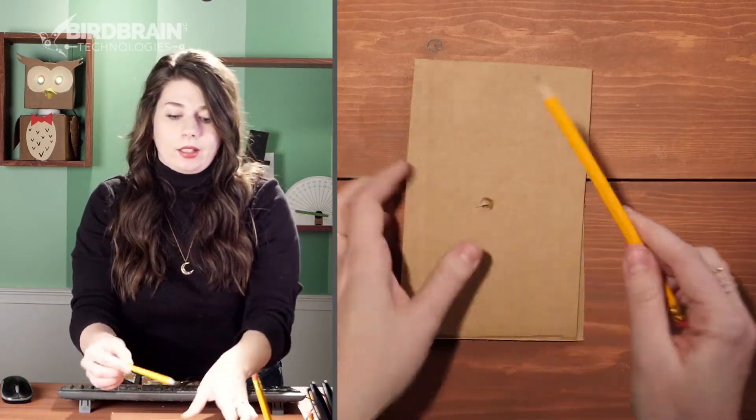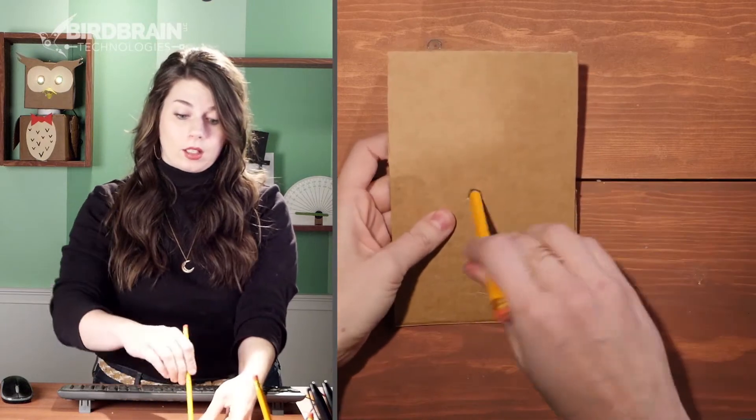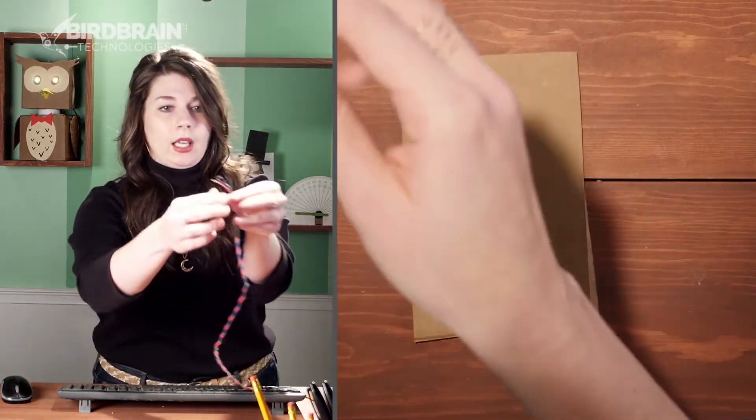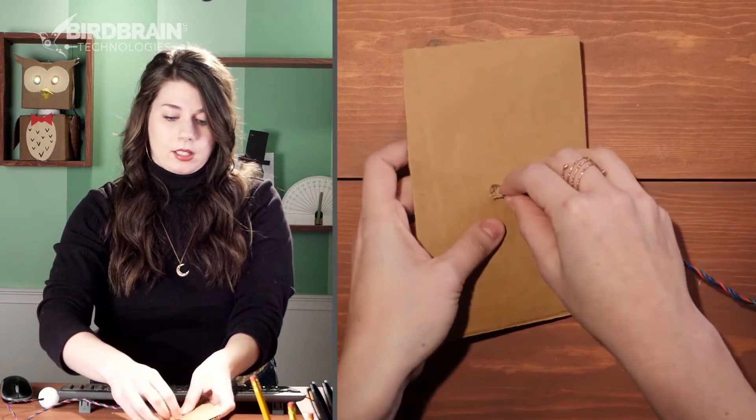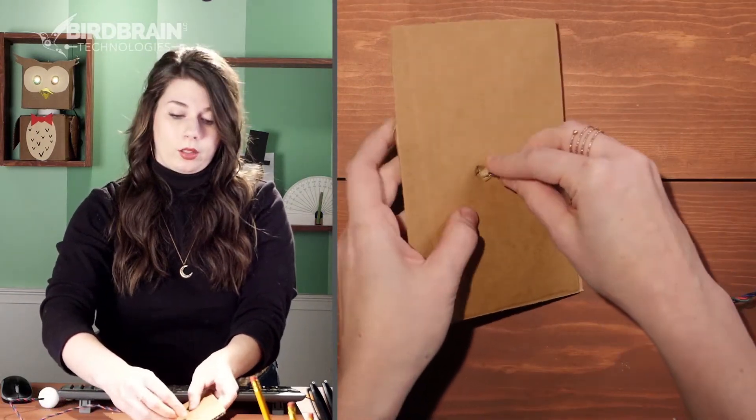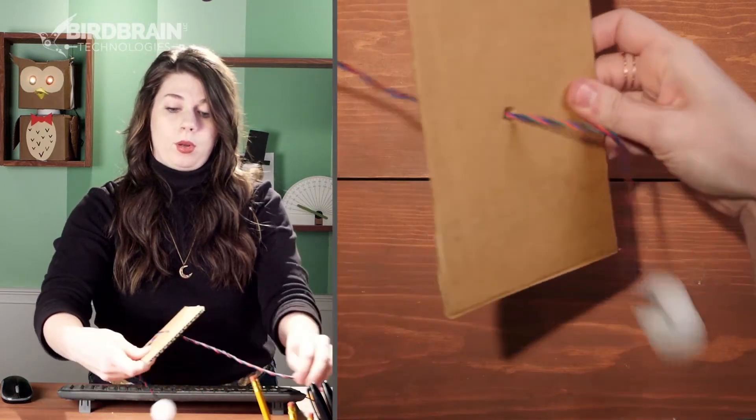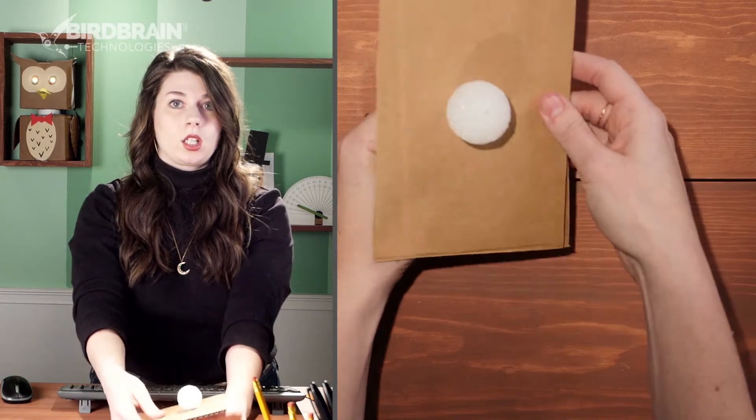You can grab a pencil or anything else that has a point on the end of it, and smoosh through your X to make it into a little hole. And then you take your LED, whether it's a single color, tricolor, whatever, and you feed it through, wires first, pull it through, and ta-da!